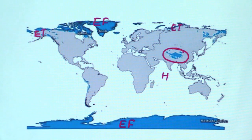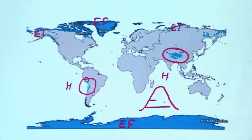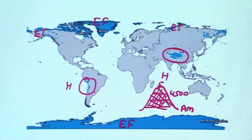H-type is montane climate. These areas are not at high latitude but at high altitude. Looking at the map, the Indian and Himalayan cordilleras are marked with ET and EF-type symbols because of their height, not latitude.